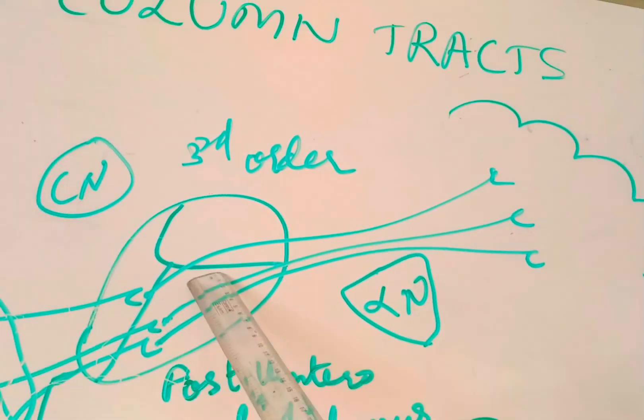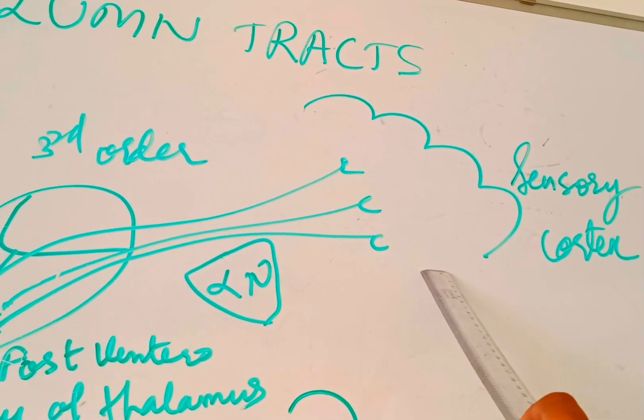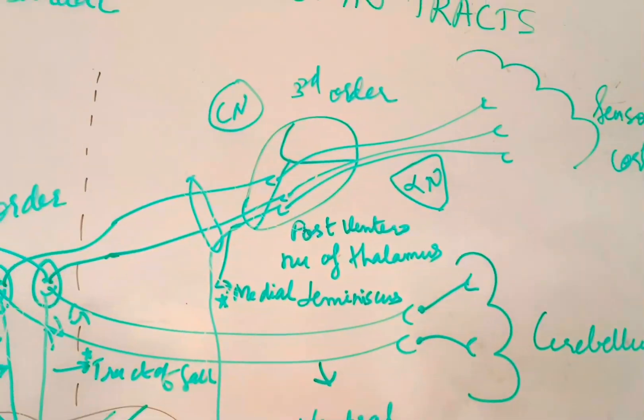Axons in the medial lemniscus synapse with the neuron of the posterolateral ventral nucleus of the thalamus, and this projects to the posterior central gyrus of the cerebral cortex.